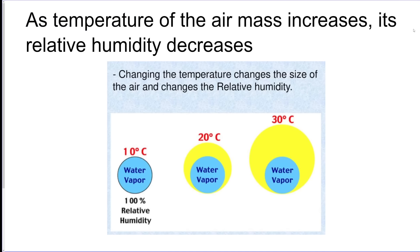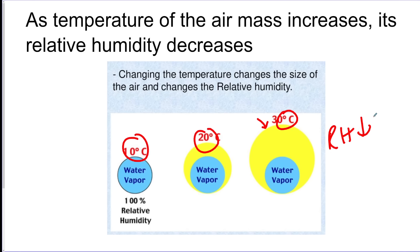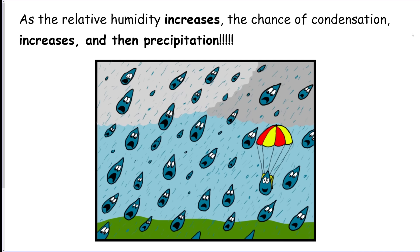Relative humidity is the percentage of how much the air is full of water. As the temperature of an air mass increases, relative humidity goes down because you have the same amount of water vapor but more space. You can see that in the 30°C picture — as you go from 10 to 20 to 30 degrees Celsius, relative humidity goes down.